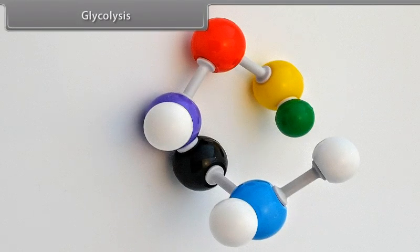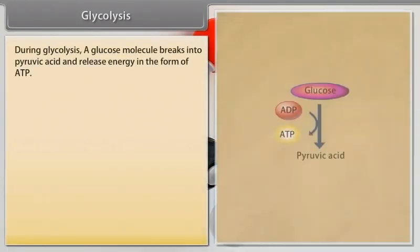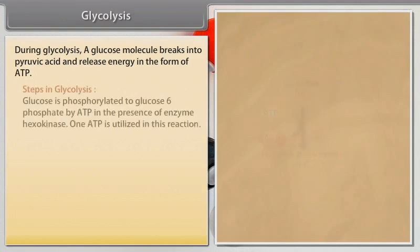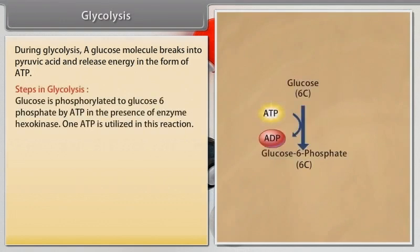During glycolysis, a glucose molecule breaks into pyruvic acid and releases energy in the form of ATP. In the steps of glycolysis, glucose is phosphorylated to glucose-6-phosphate by ATP in the presence of enzyme hexokinase.